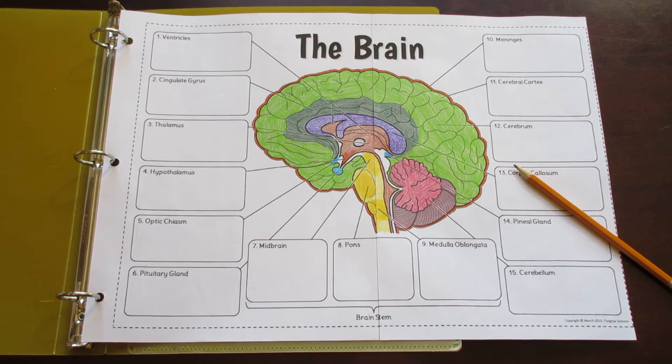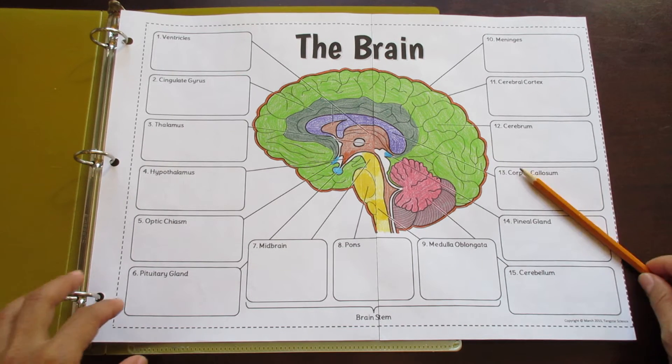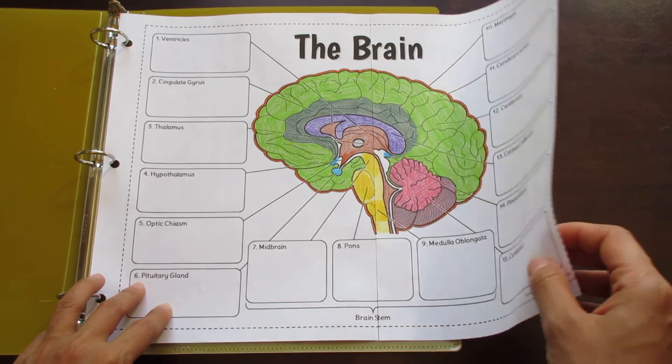This is the Tang Star Signs Big Brain Foldable. In fact, it's not just one foldable, it's actually three.